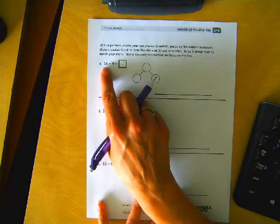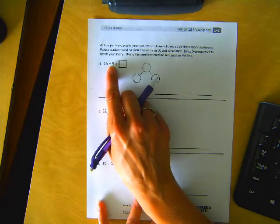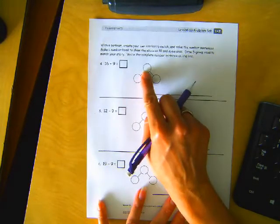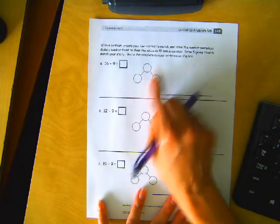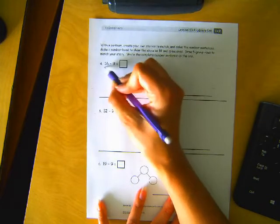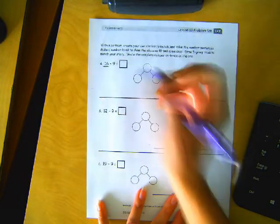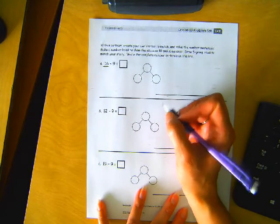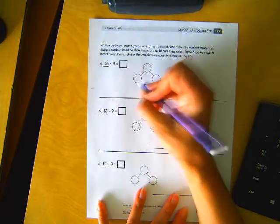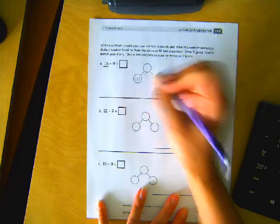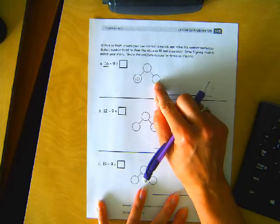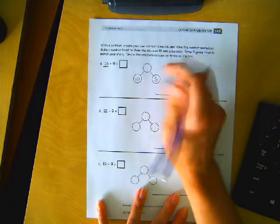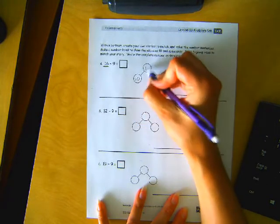So it looks like we have sixteen minus nine equals blank. Now in order to do that and put it into our number bond, it wants a ten and some ones. This first number right here is going to be the number we break up into tens and ones. So sixteen is made up of ten. And how many ones? Six, right? And then that makes the sixteen.